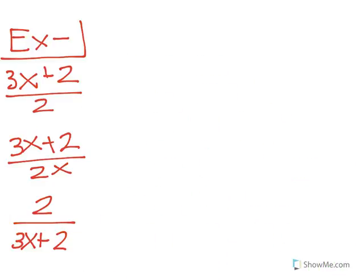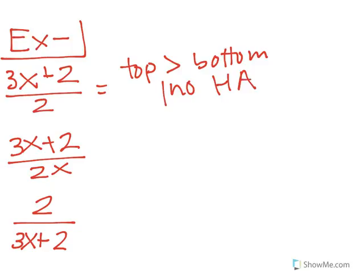This first example we see that the top coefficient is bigger because this top is 3x plus 2, so that's like 3x to the first plus 2. But on the bottom there is no x. So that's like saying 2 times x to the 0, which would turn that x into 1. In this case the top is bigger than the bottom, so there would be no horizontal asymptote for this graph.